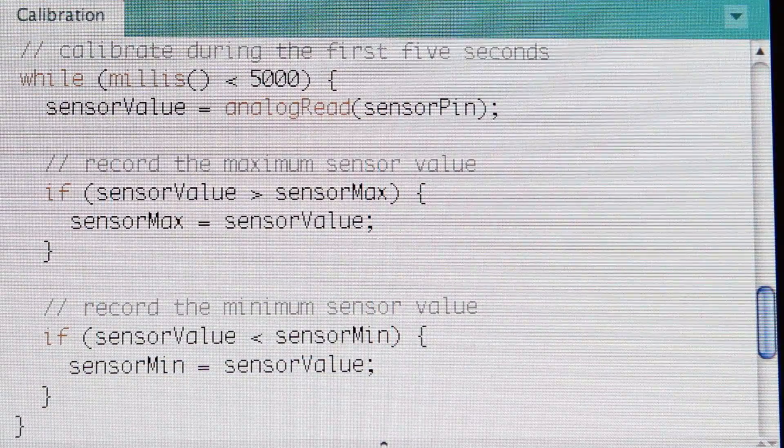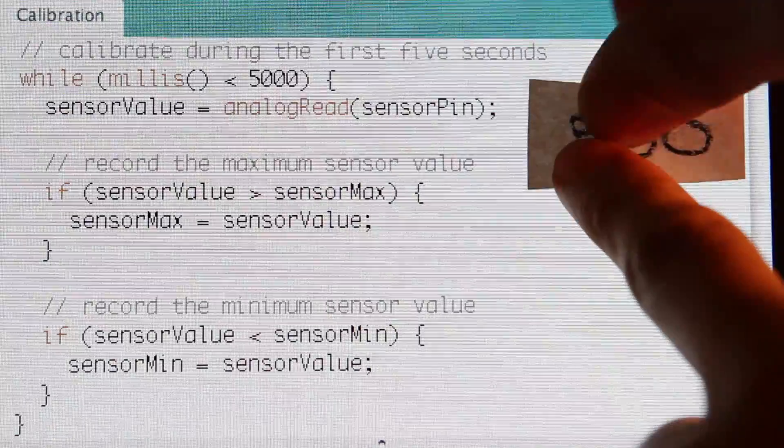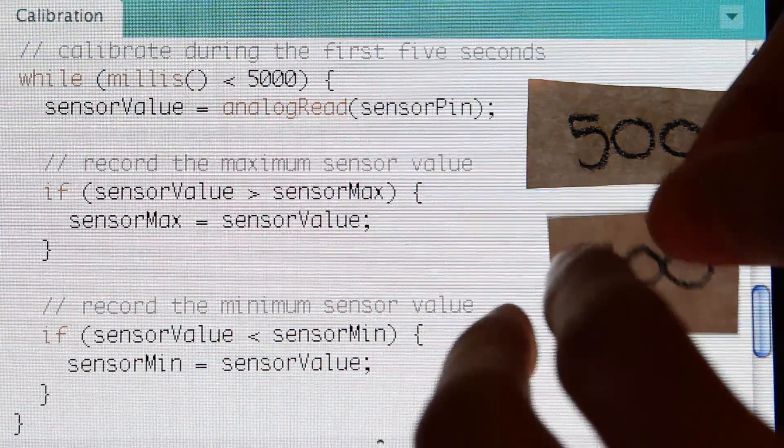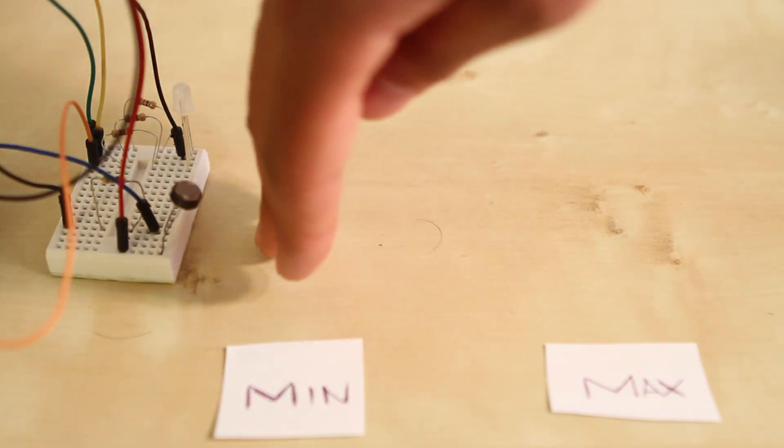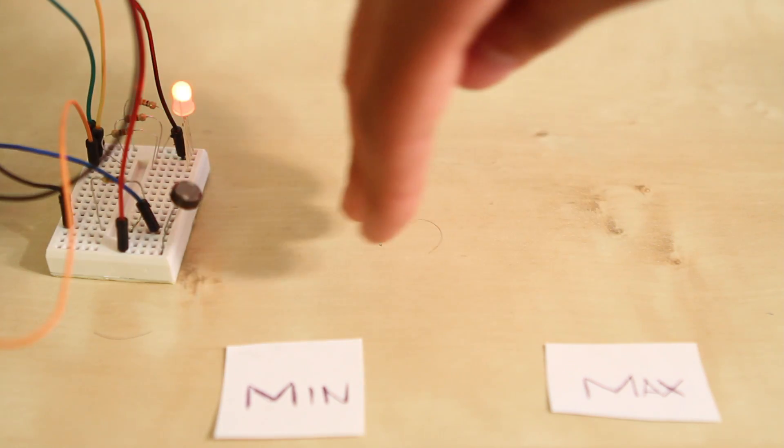To get a better idea of how things will turn out, just imagine the value 500 going through this code and then the value 400. Now with max and min set, you have achieved calibration.